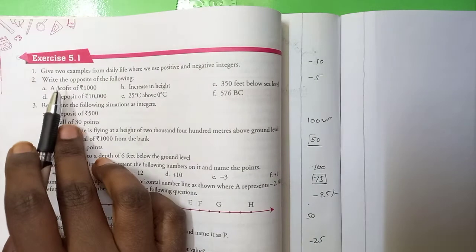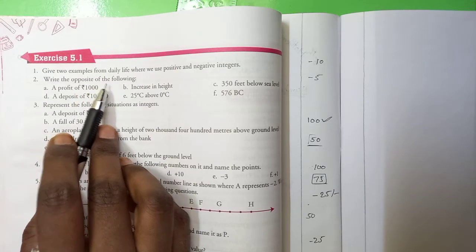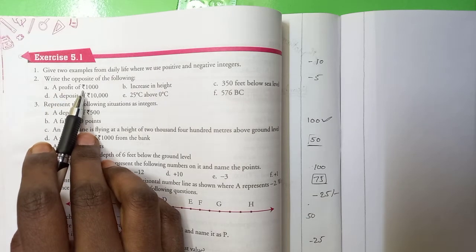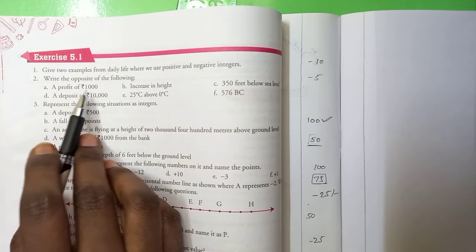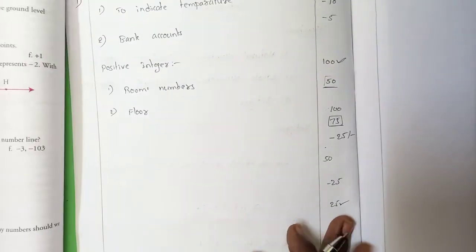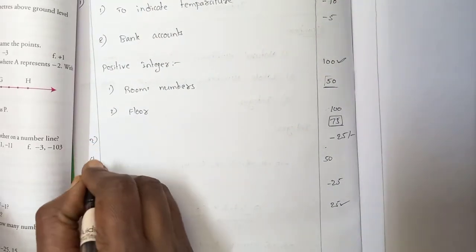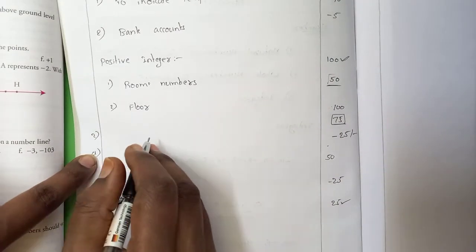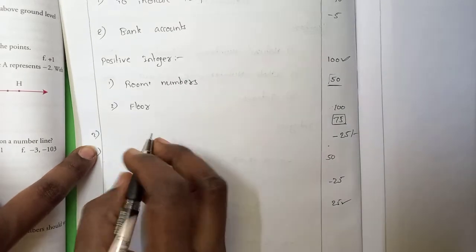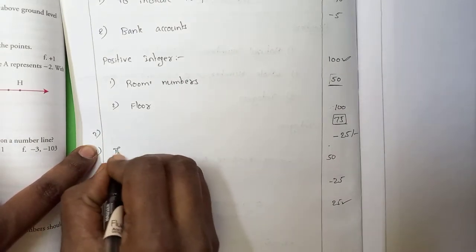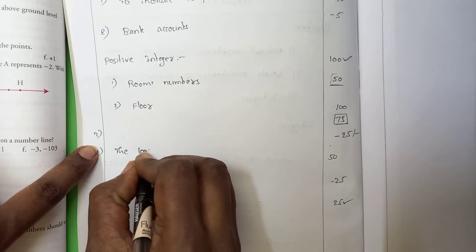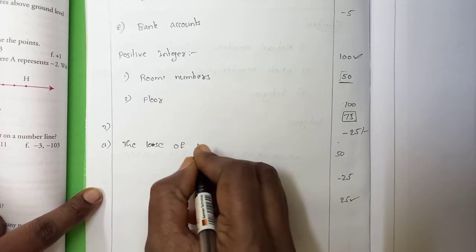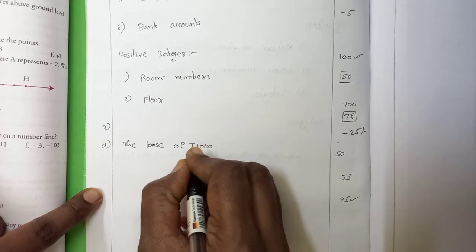Next, let us move to the second one: write the opposite of the following. They gave a small sentence and we have to write the opposite sentence. A profit of 1000 rupees — please copy the entire question. The opposite of profit is loss. The loss of 1000 rupees.